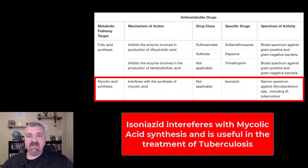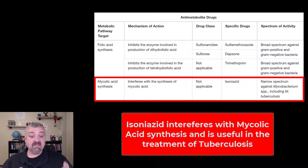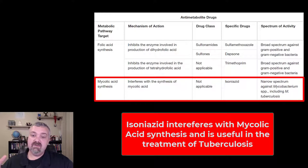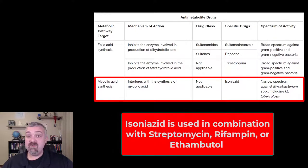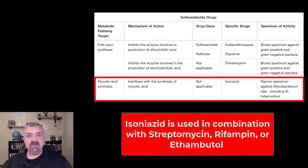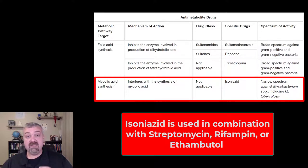The example of a mycolic acid inhibitor would be isoniazid — a very important antibiotic. This drug is usually used in combination with other drugs; streptomycin can be good against killing mycobacterium, and we've also done a video on rifampin, so you typically see combination therapy.